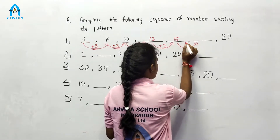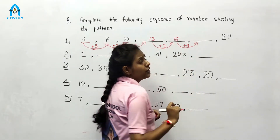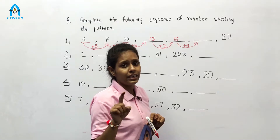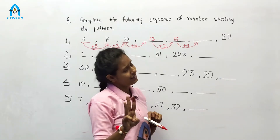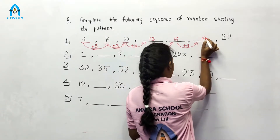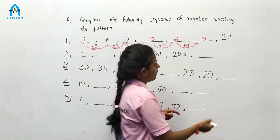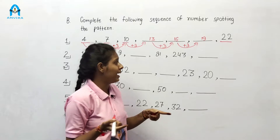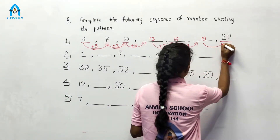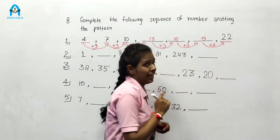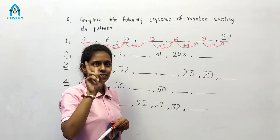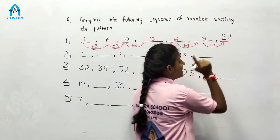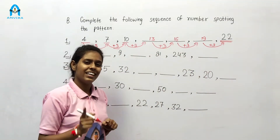For the next number after 16, we add 3. So 16 minus — we add 3 to 16: counting 16, 17, 18, and 19. The next number is 19. Then 19 plus 3: counting 19, 20, 21, and 22. Our next number is 22. Let's check — yes, our pattern is correct.